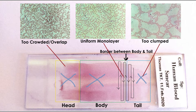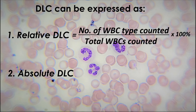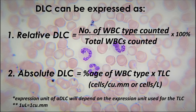Count at least 100 or 200 white blood cells to get reliable results. DLC can be expressed in two ways: R-DLC or relative differential leukocyte count, and A-DLC or absolute differential leukocyte count. To obtain the R-DLC, convert cell counts into percentage using the formula: R-DLC = (number of WBC type / total WBCs counted) × 100%. If you have data on the total leukocyte count, you can also calculate A-DLC: A-DLC = percentage of WBC type × total leukocyte count, giving the total number of that cell type per microliter or liter of blood.